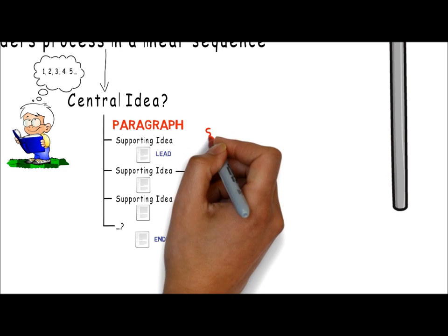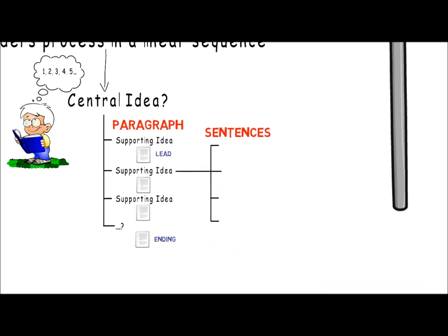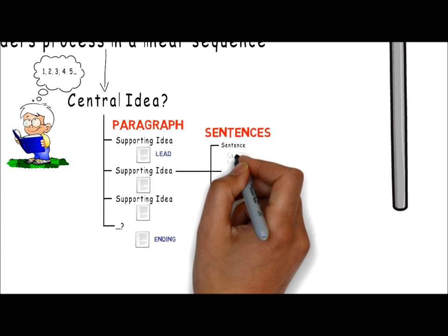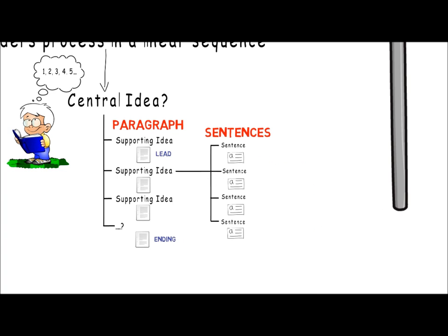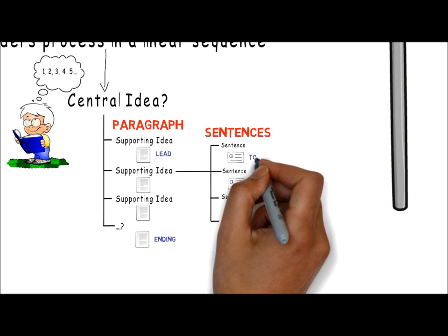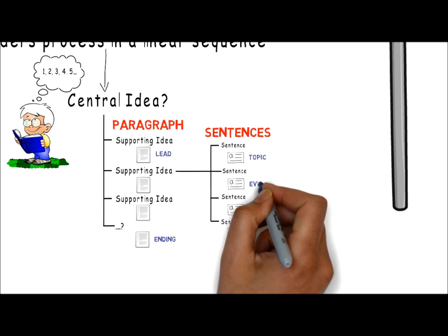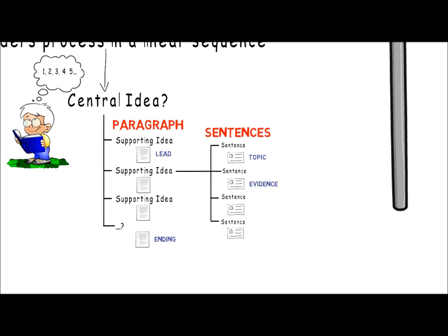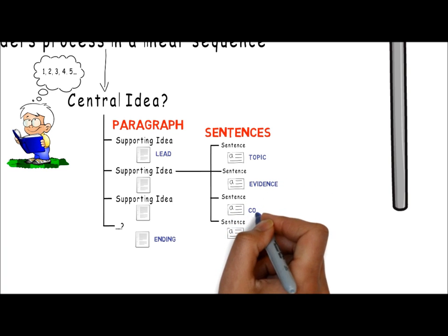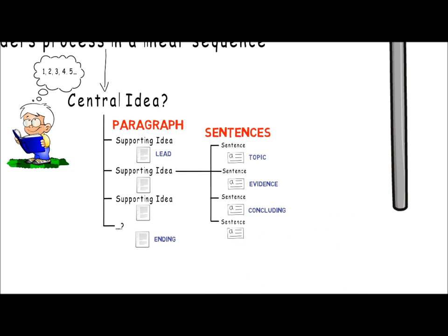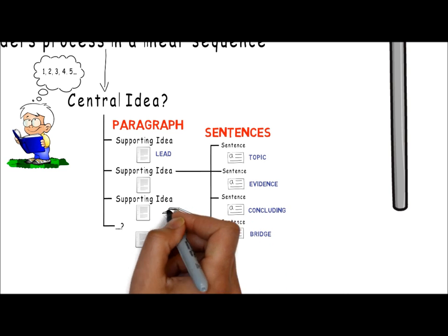Within each paragraph are sentences. Each sentence should do good work in contributing to the main idea of the paragraph — if they don't, delete them. The topic sentence is common at the start of the paragraph to provide an overview of the supporting idea. Subsequent sentences should highlight evidence supporting the idea. The concluding sentence should tie the evidence together to leave the reader convinced of the validity of the supporting idea. The final sentence in the paragraph should provide a bridge between the supporting idea of the current paragraph and the supporting idea of the following paragraph.